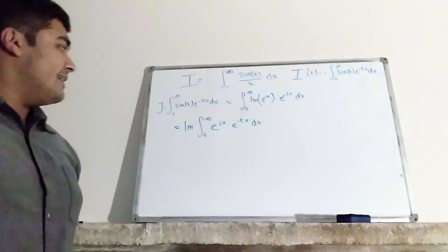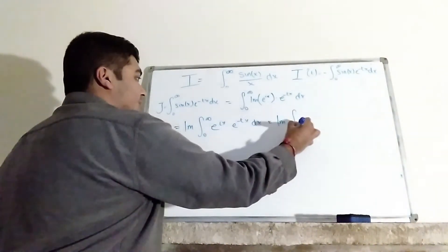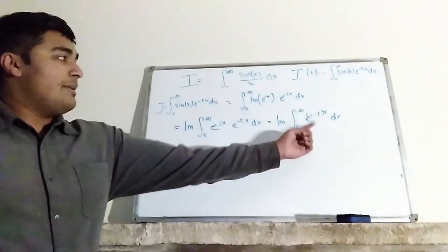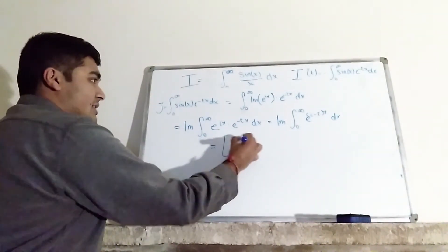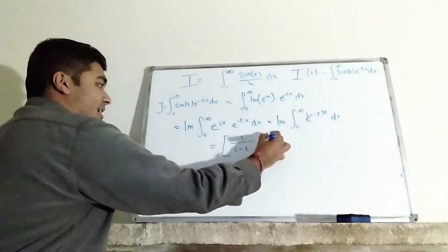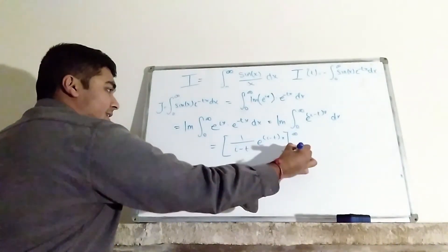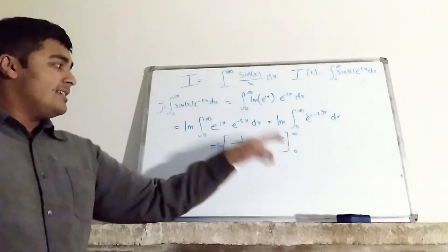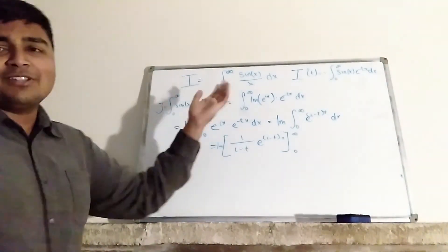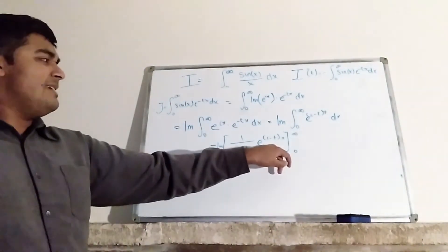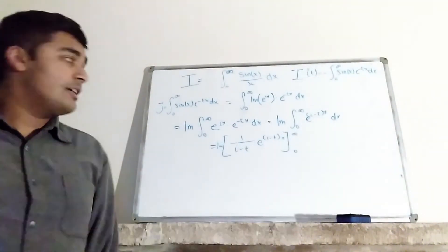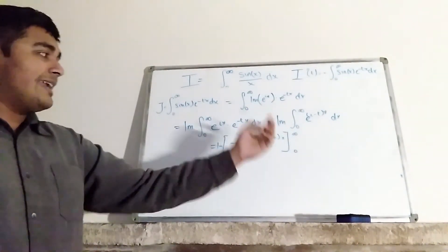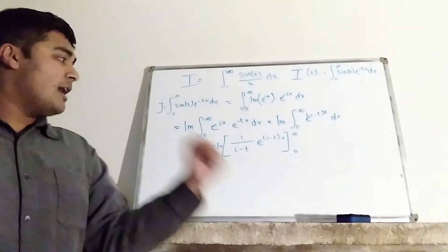Combining the two exponentials, this is the imaginary part of the integral from 0 to infinity of e to the (i minus t)x dx. The antiderivative is 1 over (i minus t) times e to the (i minus t)x, evaluated from 0 to infinity. Since t is positive, at x equals infinity this gives e to the minus infinity, which goes to 0. So I only need the x equals 0 term, which gives e to the 0 equals 1. I'm left with the imaginary part of minus 1 over (i minus t), which equals the imaginary part of 1 over (t minus i).